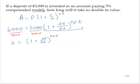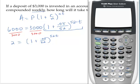Now that 1 plus 0.05 over 52, let's calculate that. 1 plus 0.05 over 52 is 1.000961538.